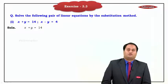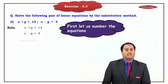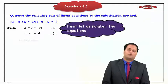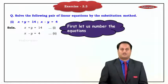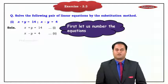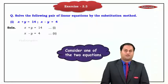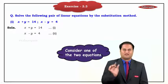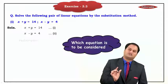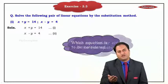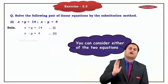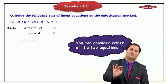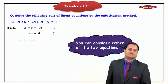The first thing that we need to do is write both the equations and number them as equation number 1 and equation number 2. After that, analyze both the equations and consider one of the two equations — either the first equation or the second equation. You can consider either of the two equations, whichever you like.